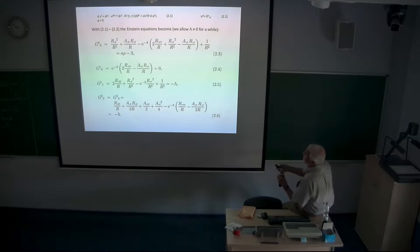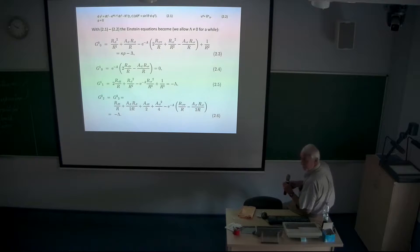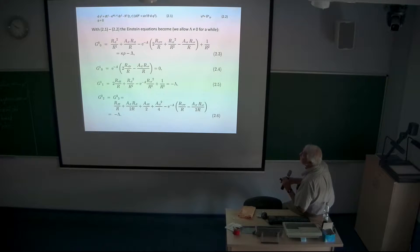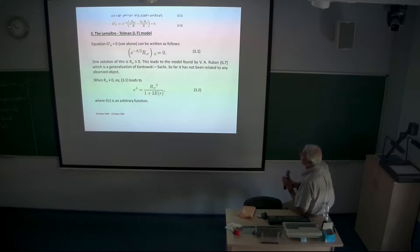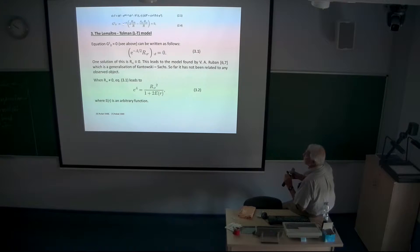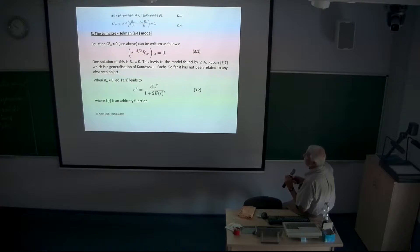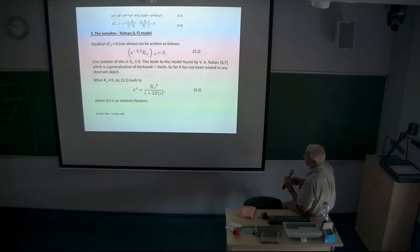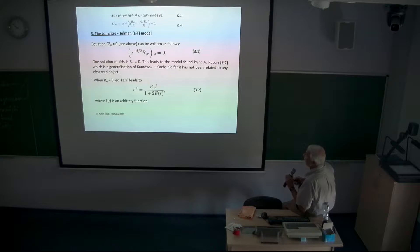It follows immediately from the geodesic equations that c depends only on the time coordinate, and a simple further transformation results in c being zero. The metric finally obtained is written here, and with these assumptions this is the complete set of Einstein's equations. One of them has a particular form where one component must be zero.